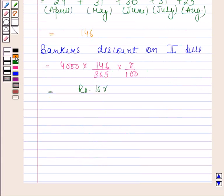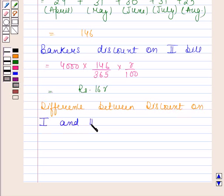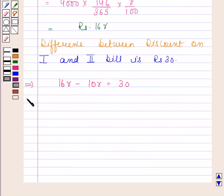Now in the question, we are given that difference between discount on first and second bill is rupees 30. This implies 16R minus 10R is equal to 30. This implies 6R is equal to 30, and this implies R is equal to 5 percent.